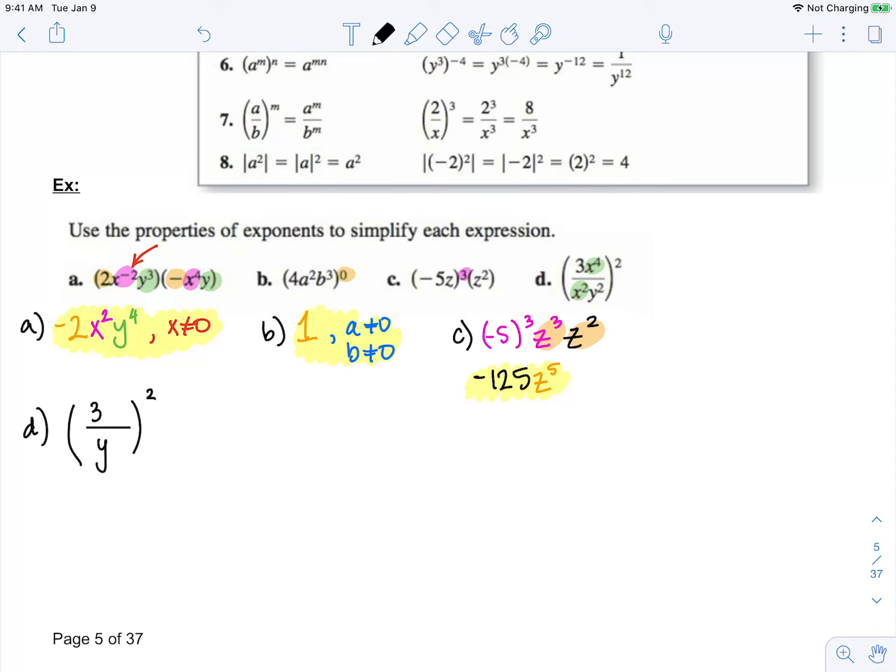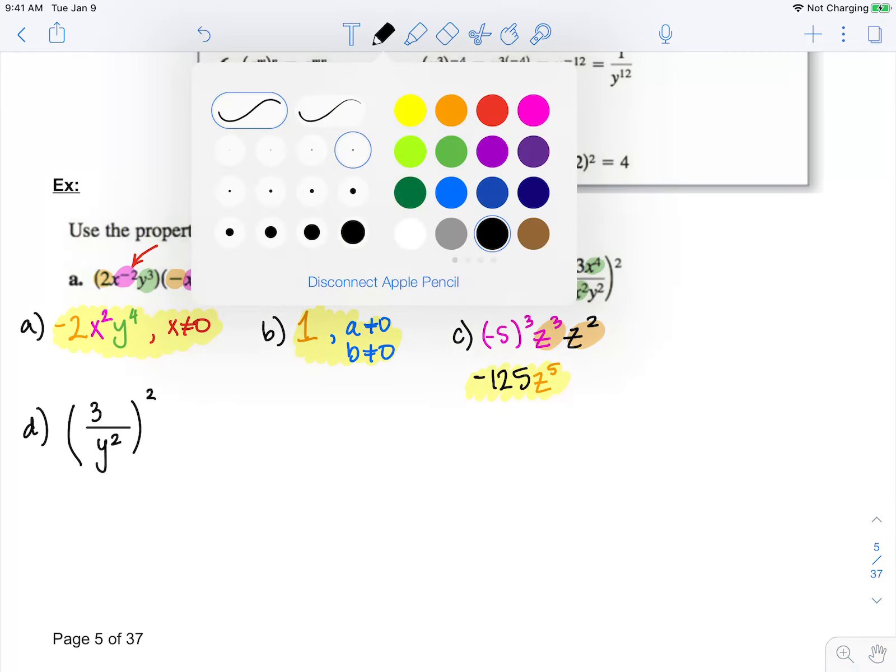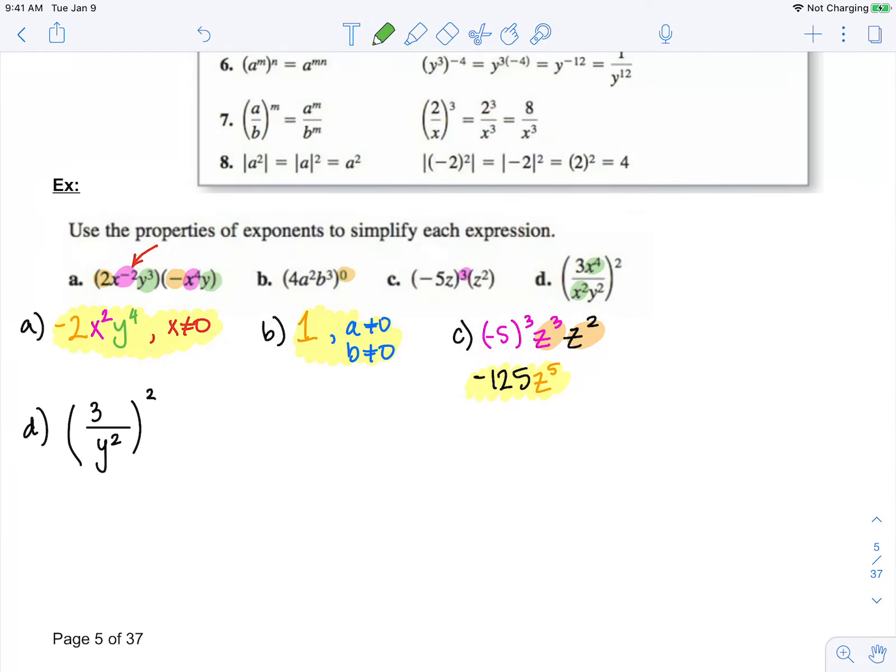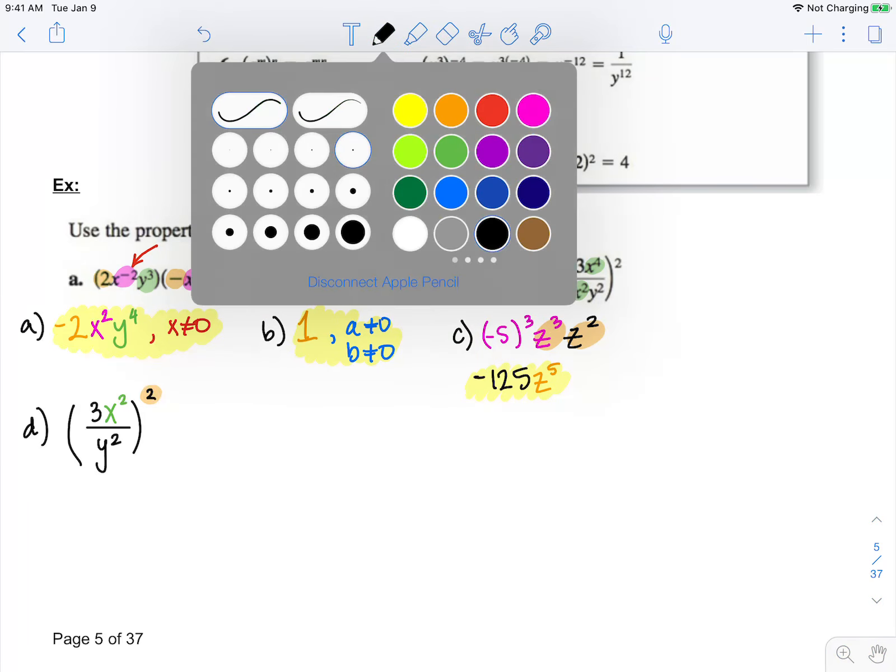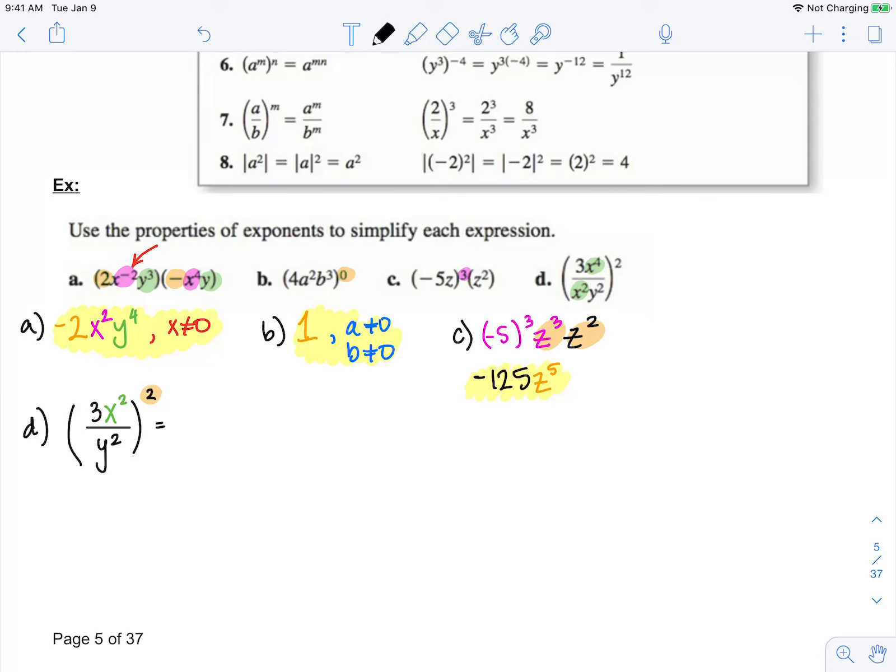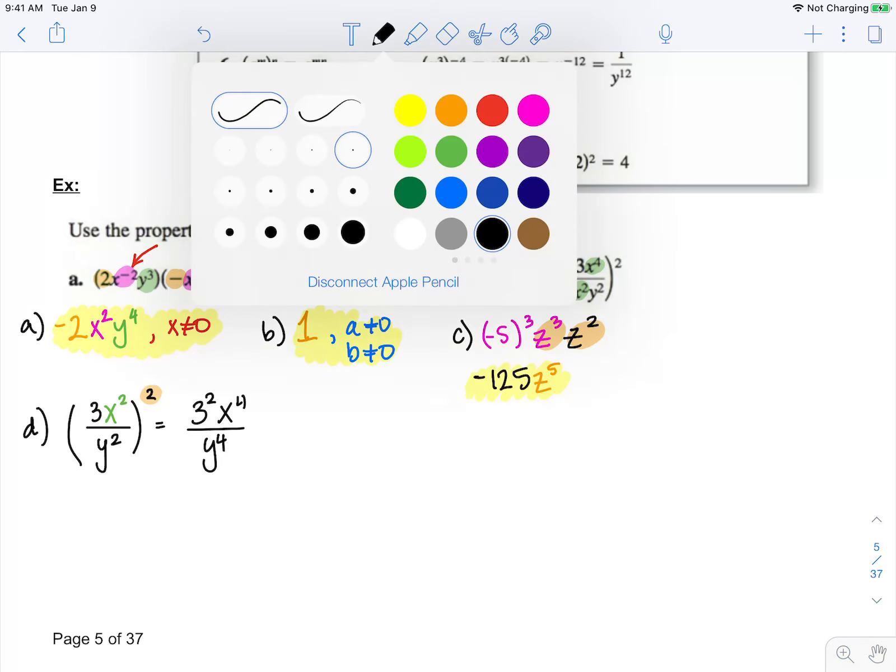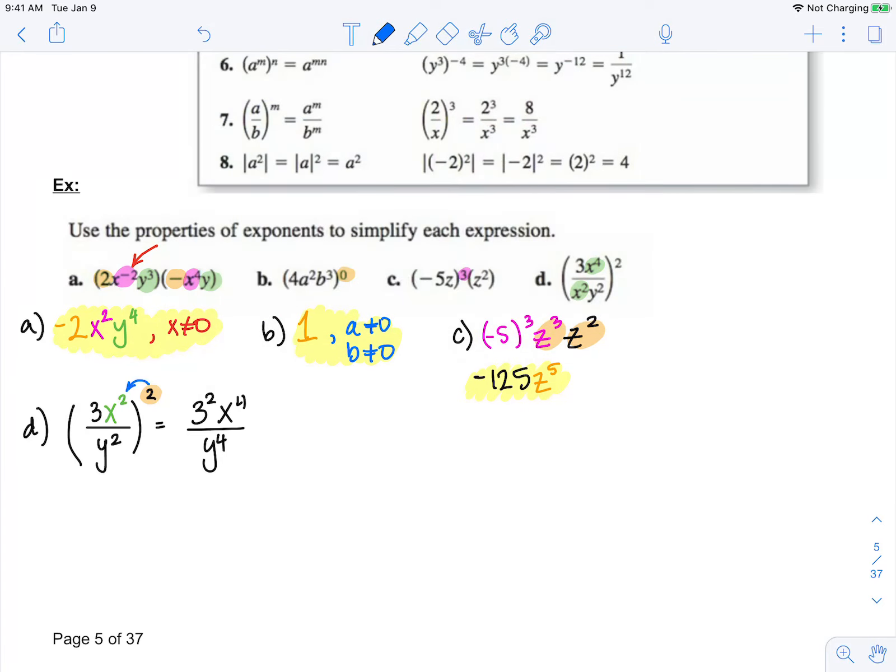So the 3 and the y squared are not changing. But x to the 4th over x squared simplifies to be x squared. Now what I'll do is distribute this square to everything inside of my parenthesis. So that makes 3 squared x to the 4th over y to the 4th. Because remember, when you raise a power to a power, you multiply these exponents.